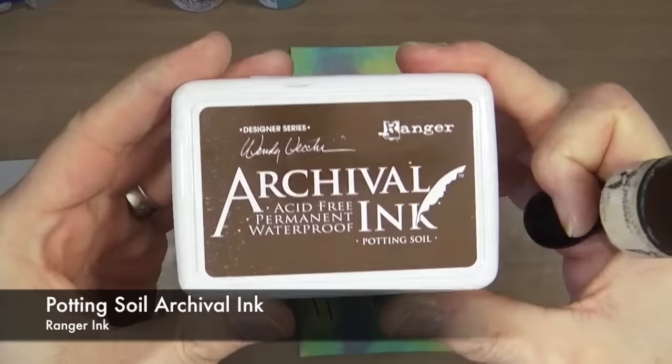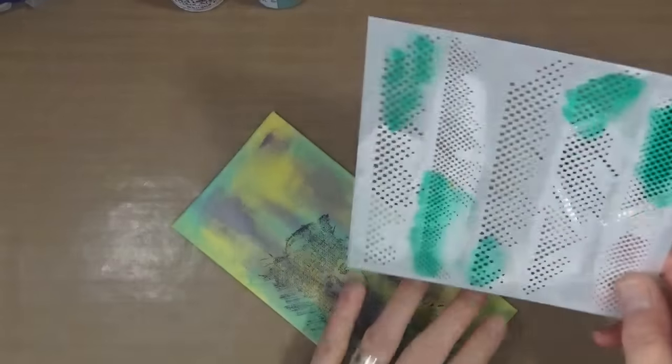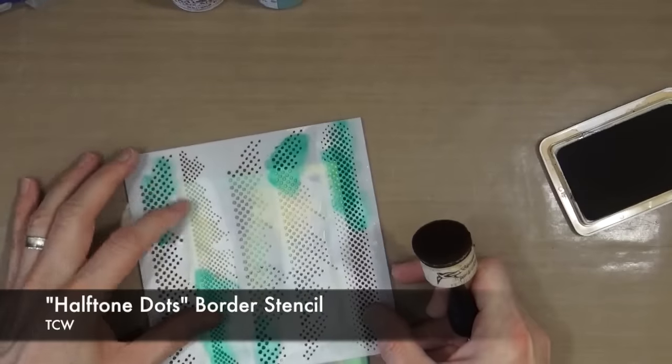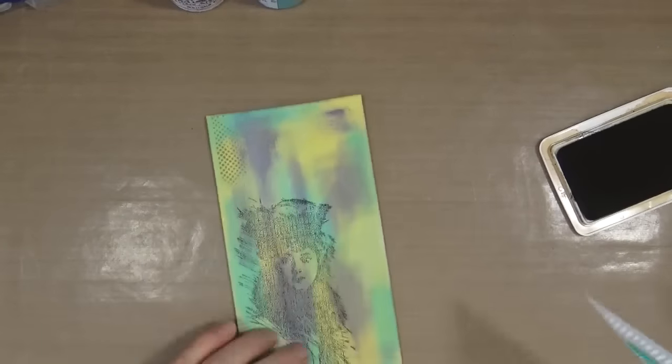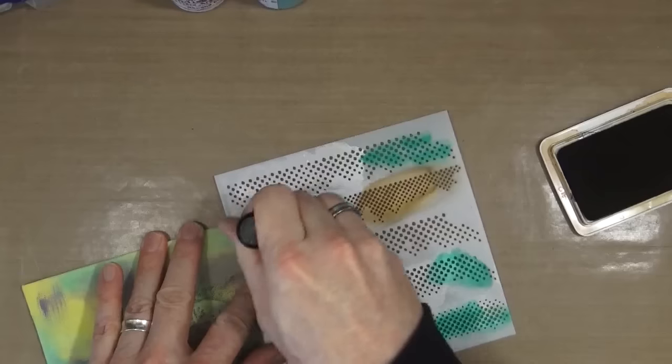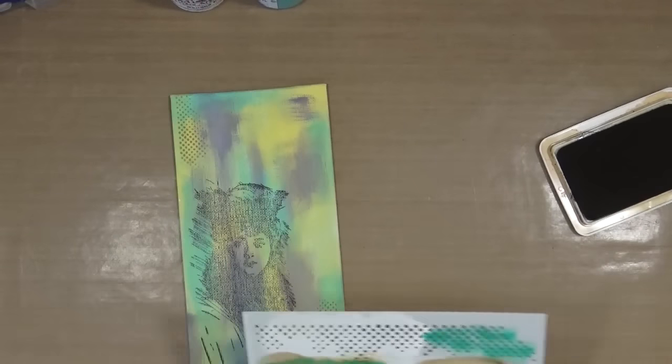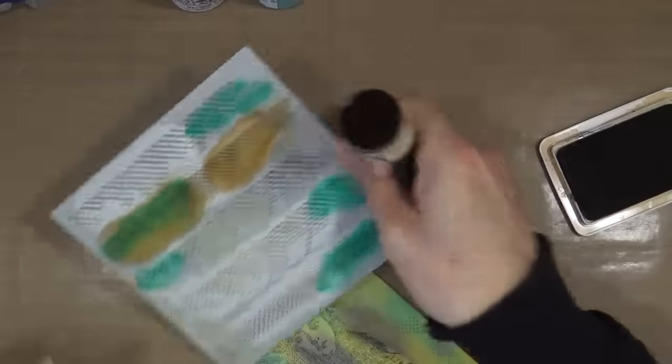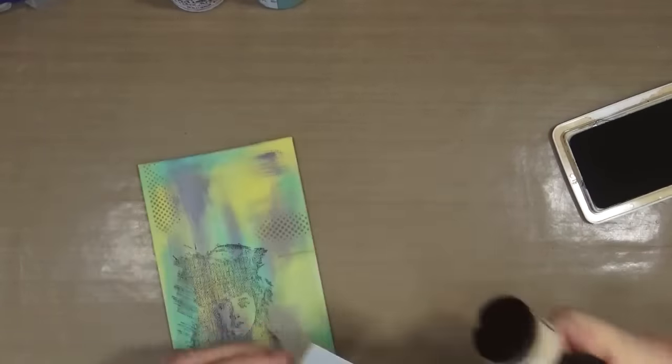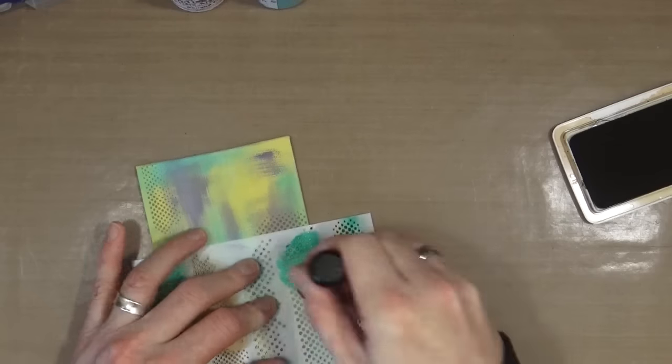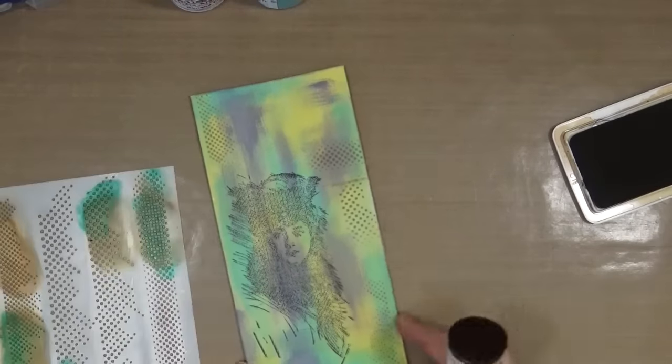Now I have my image. I'm going to bring out my archival ink—this is the Potting Soil—and with an ink blending tool, I'm going to use this halftone dots stencil from TCW just to add some earthy tones around the canvas, to add a little bit of decoration around the outside with a little bit more layering.